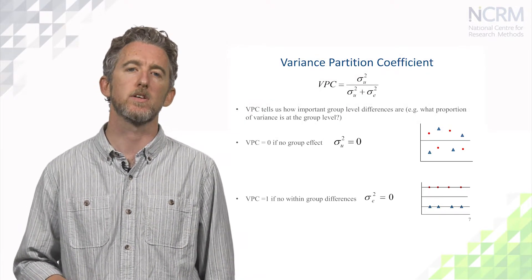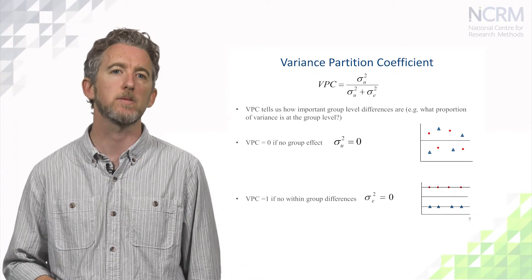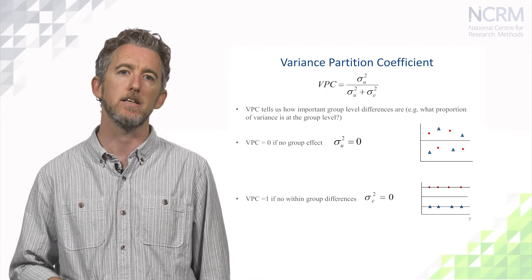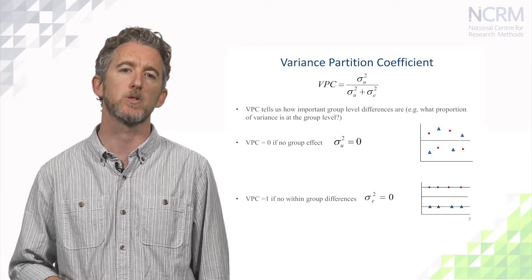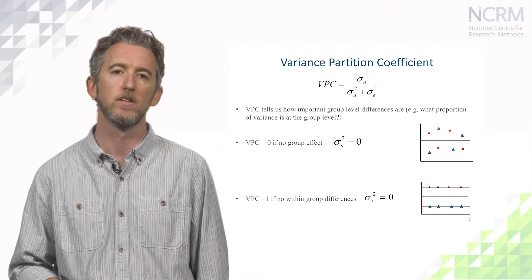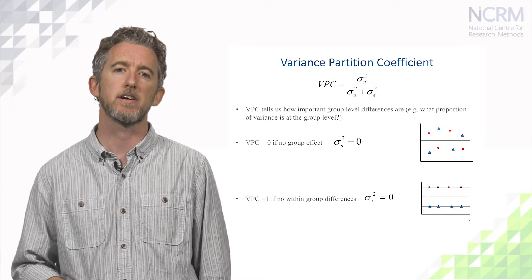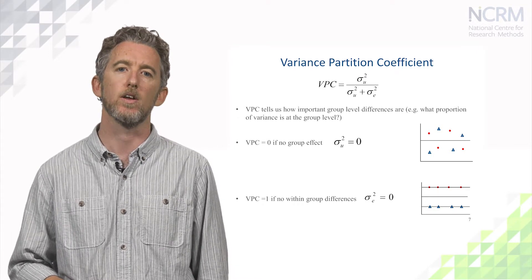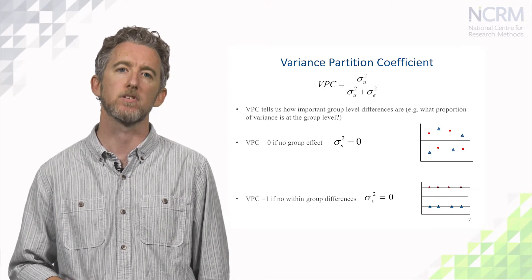This looks at what proportion of the total variance, made up of σ²ᵤ and σ²ₑ, can be attributable to differences between groups, σ²ᵤ. This ranges from 0, when there is no group effect, to 1, where there are no within group differences.